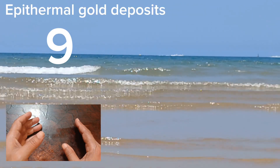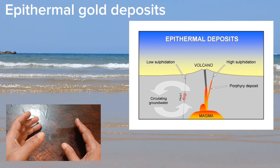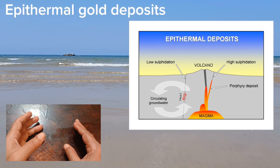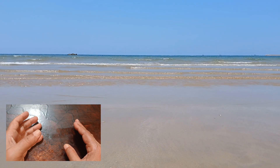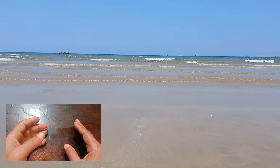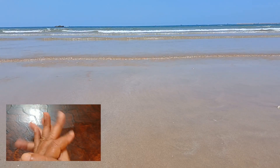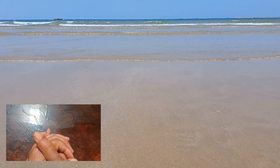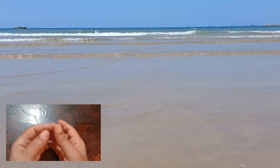Epithermal gold deposits: epithermal gold deposits are formed near the earth's surface through the deposition of gold-rich fluids from volcanic activity. These deposits are often associated with hot springs, geothermal systems, and volcanic regions.